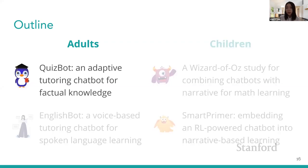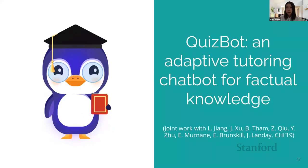Now I'm going to start with the first system, QuizBot, a dialogue-based adaptive learning system for adults to learn factual knowledge. This work was conducted in collaboration with collaborators at Stanford and published at CHI 2019.